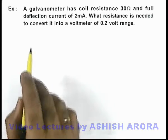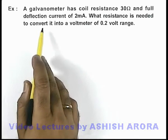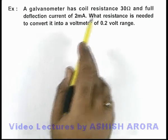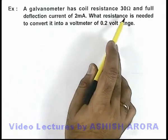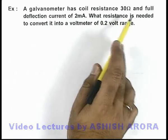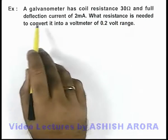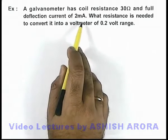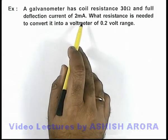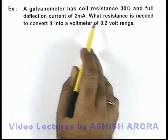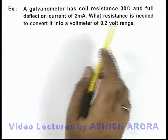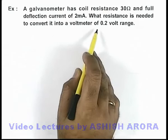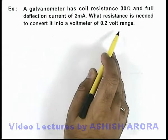In this example, we are given that a voltmeter has a coil resistance of 30 ohms and a full deflection current of 2 milliamperes. We are required to find what resistance is needed to convert it into a voltmeter of 0.2 volt range.